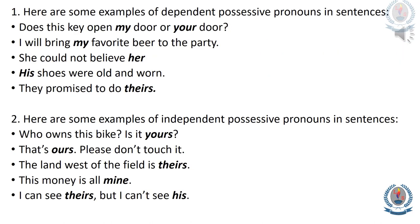Here are some examples of dependent possessive pronouns in sentences: Does this key open my door or your door? I'll bring my favorite beer to the party. She could not believe her luck. His shoes were old and worn. They promised to do theirs. And here are some examples of independent possessive pronouns: Who owns this bike? Is it yours? That's ours — please don't touch it. The land west of the field is theirs.